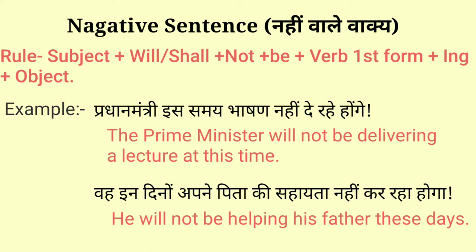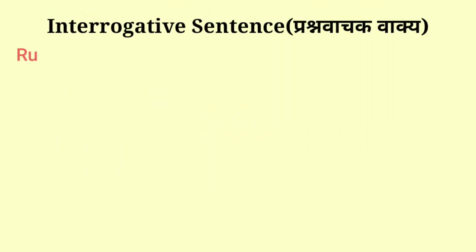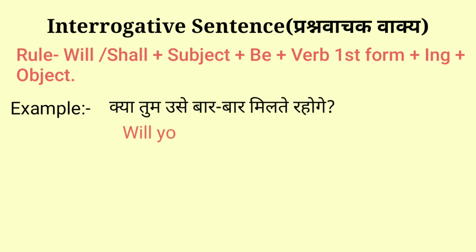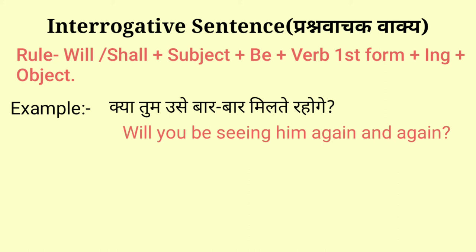Next is the interrogative sentence. For making this sentence we use: Will / Shall + subject + be + verb first form + ing + object. For example: 'Kya tum use baar-baar milte rahoge?' — Will you be seeing him again and again? In this, 'will be' is the helping verb, 'you' is the subject, 'seeing' is verb first form + ing, and the rest is the object.